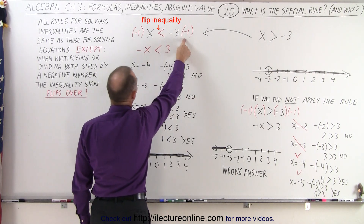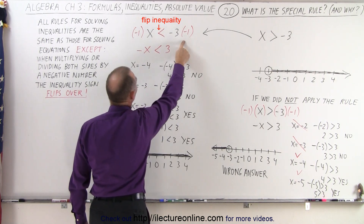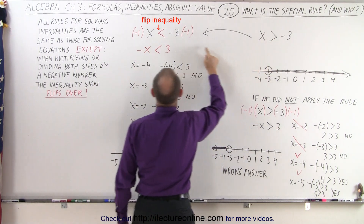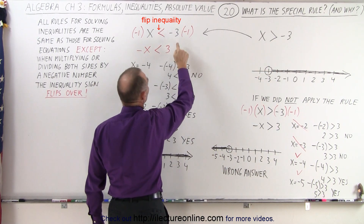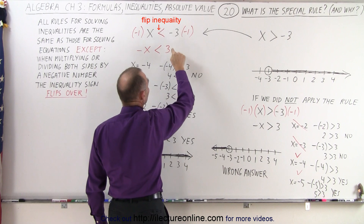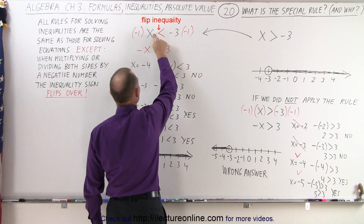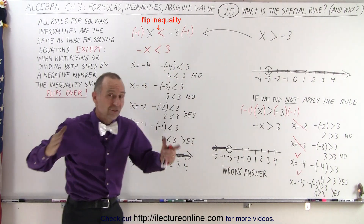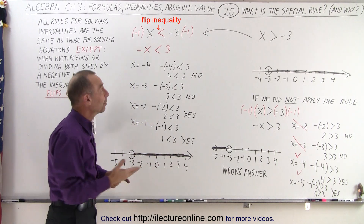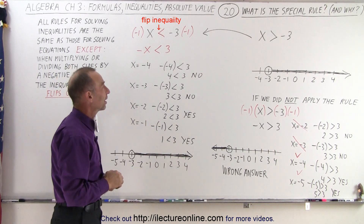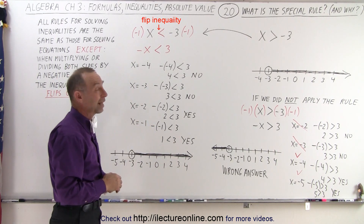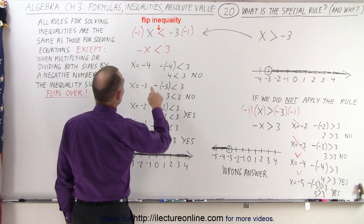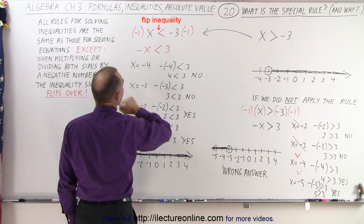We're going to multiply both sides by negative 1. Instead of greater than, we now use less than — flipping the inequality sign. The negative 3 becomes positive 3, and the positive x becomes negative x. Since we multiplied both sides by a negative number, we flip the inequality sign around. So we now have negative x is less than 3.